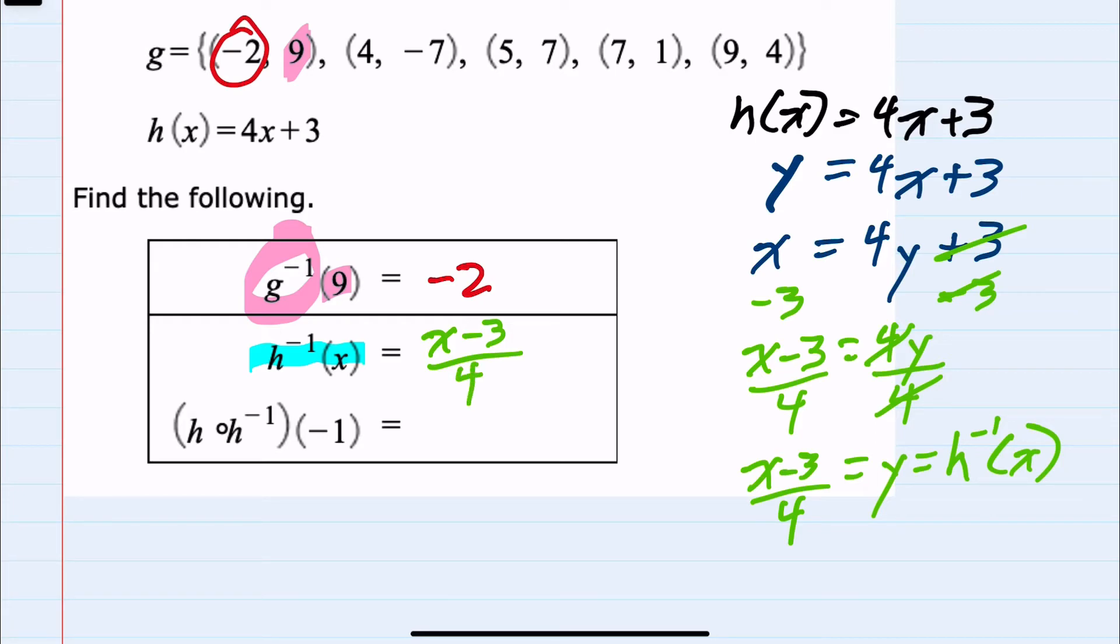And our last question here, h of inverse h of negative 1, we know that an inverse function undoes the original function. So h of the inverse will always be x. When you put an inverse function into the original function that it is an inverse of, it will always return the same value.